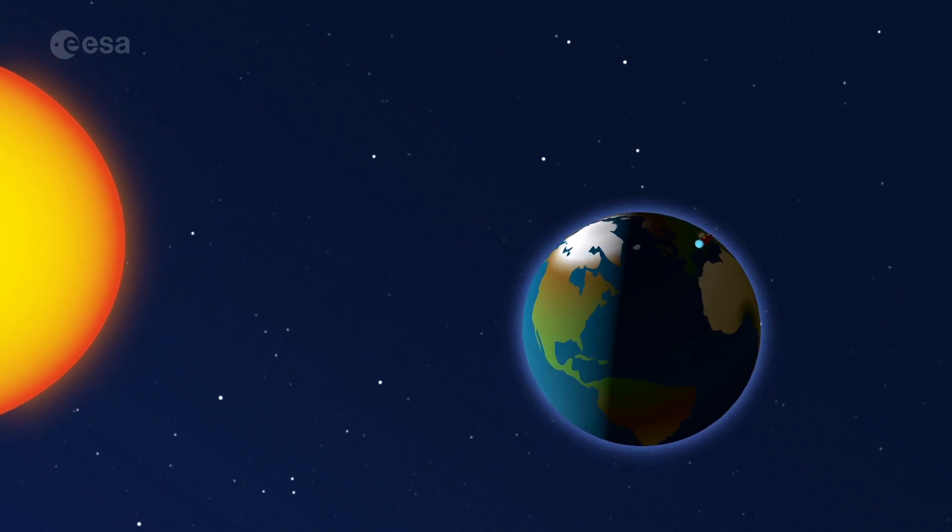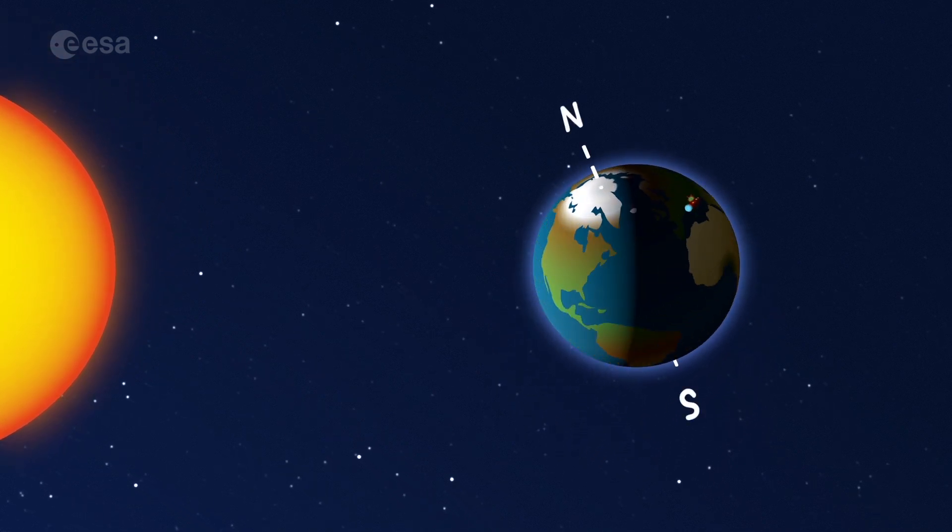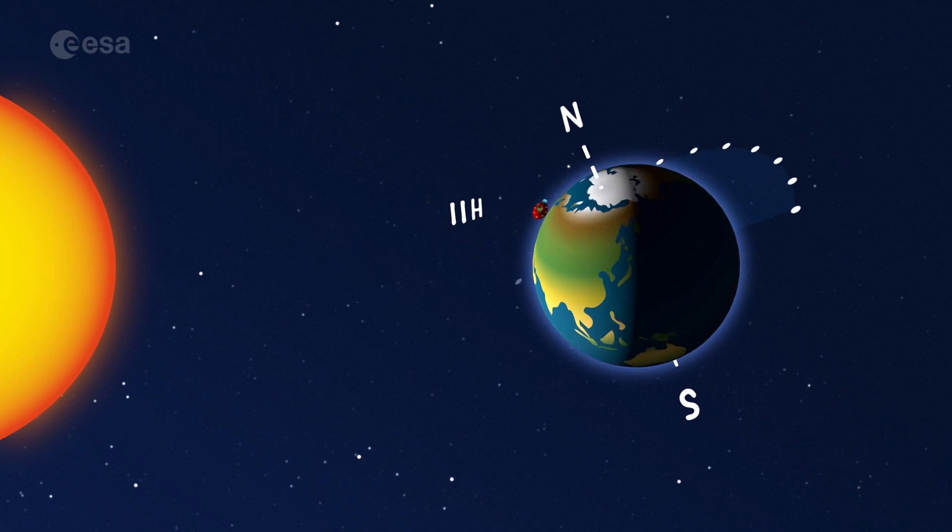Although you can't really feel it moving, it's an optical illusion. It takes 24 hours for the Earth to make a full spin. A whole day and night.